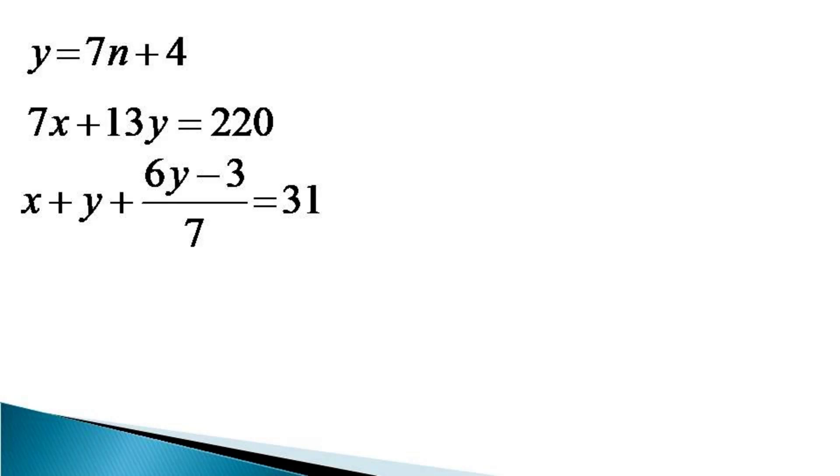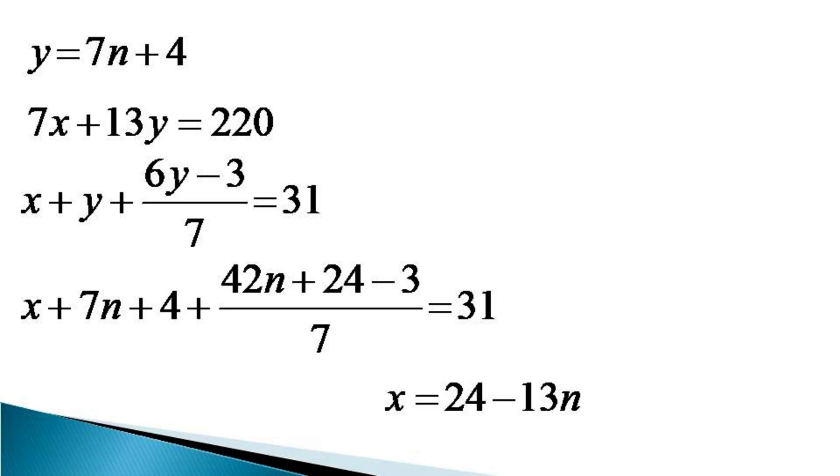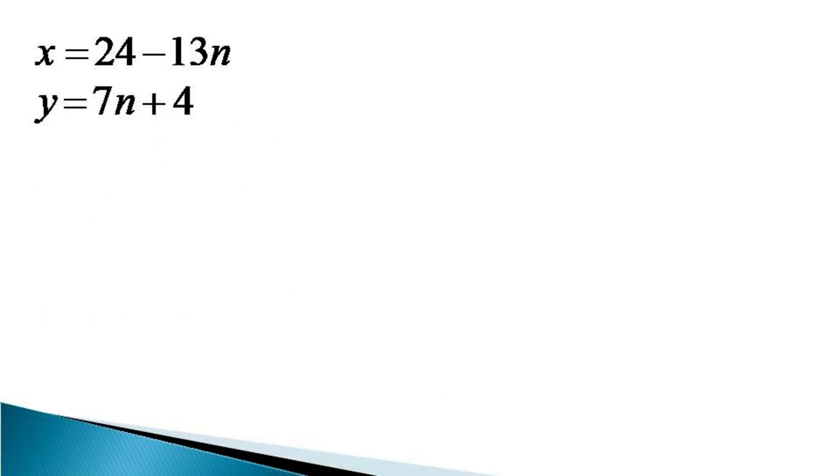Putting the value of y, we get x + 7n + 4 + (42n + 24 - 3)/7 = 31. Simplifying it, we get the value of x in terms of n as x = 24 - 13n. So the values of x and y are x = 24 - 13n and y = 7n + 4.